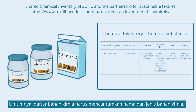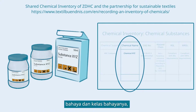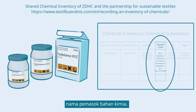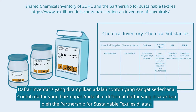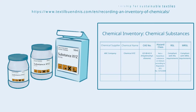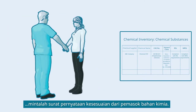Typically, the chemical inventory should indicate the name and type of chemical substance, the hazard and hazard class, the name of the chemical supplier, and the level of conformance to RSL and MRSL. The inventory shown is strongly simplified. For an example of an actual inventory, check the inventory format recommended by the Partnership for Sustainable Textiles above. If you are unsure whether the chemicals conform to the RSL and MRSL, request a written conformity declaration from the chemical supplier.